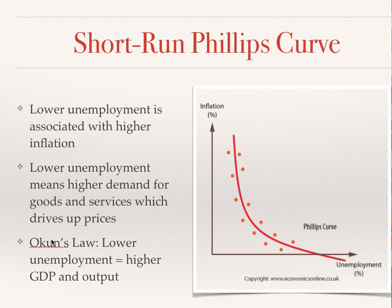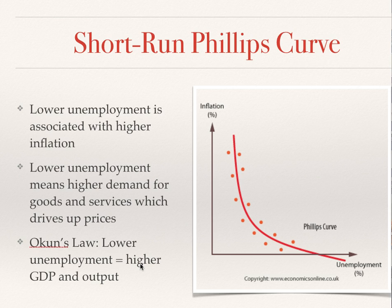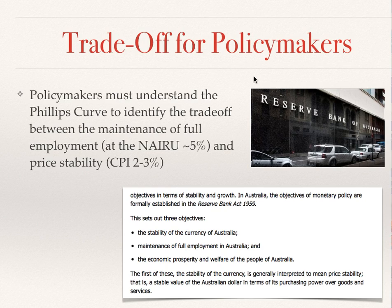Okun's law also tells us that higher production and output means a lower rate of unemployment and vice versa. Higher unemployment is associated with lower GDP, lower economic growth and output. So we can see we've got a trade-off, and this needs to be considered by a policymaker.